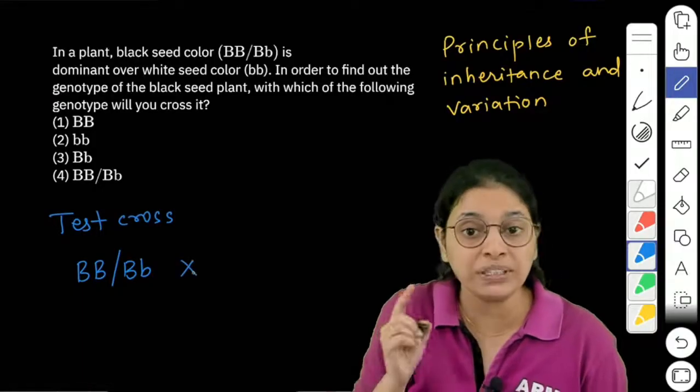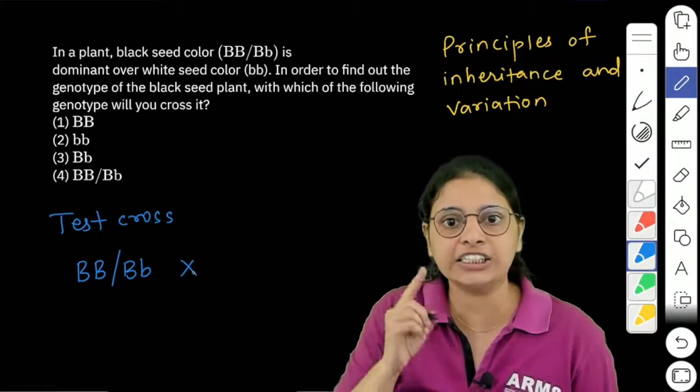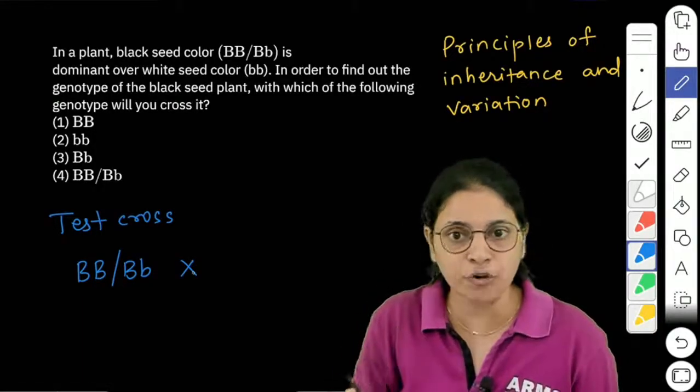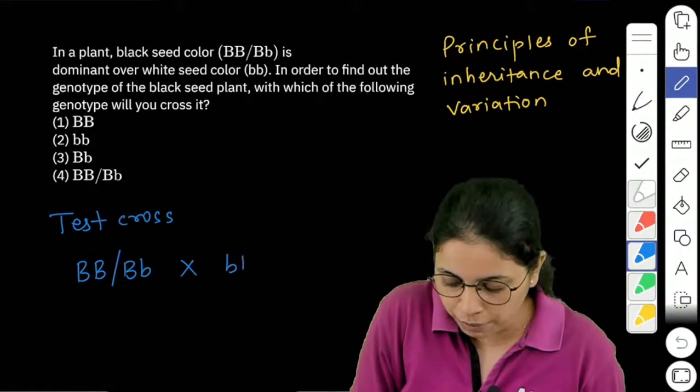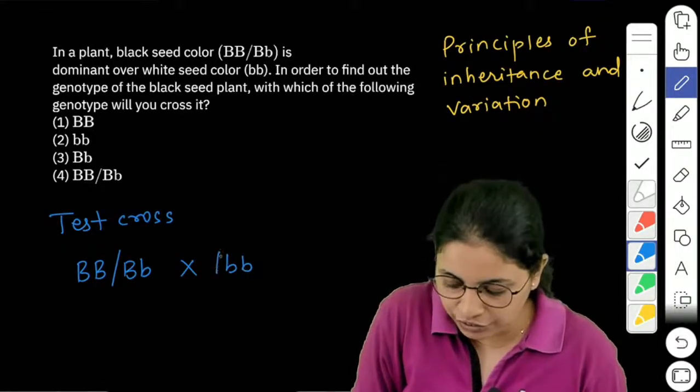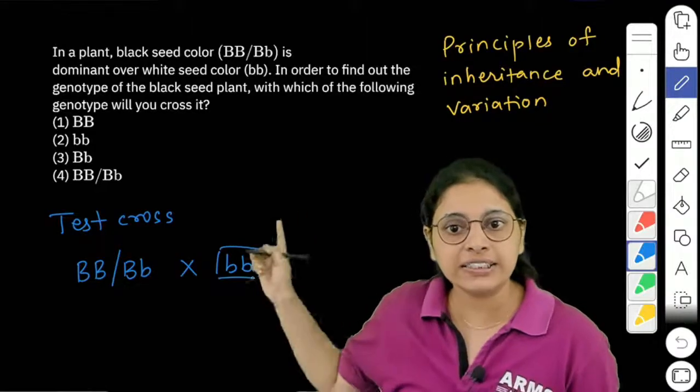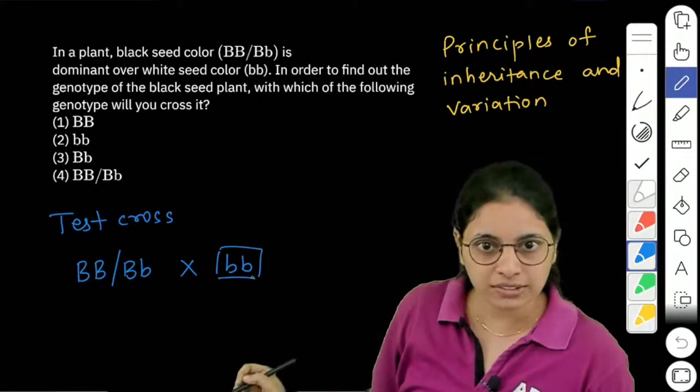We cross it specifically with the recessive parent, that is bb. This is fixed - in a test cross, we cross with the recessive parent.